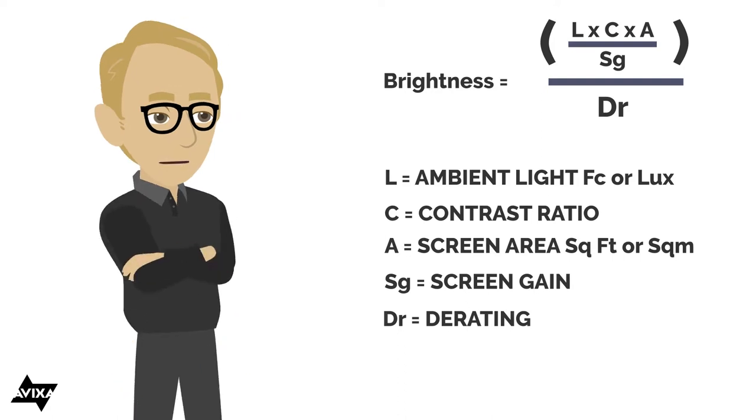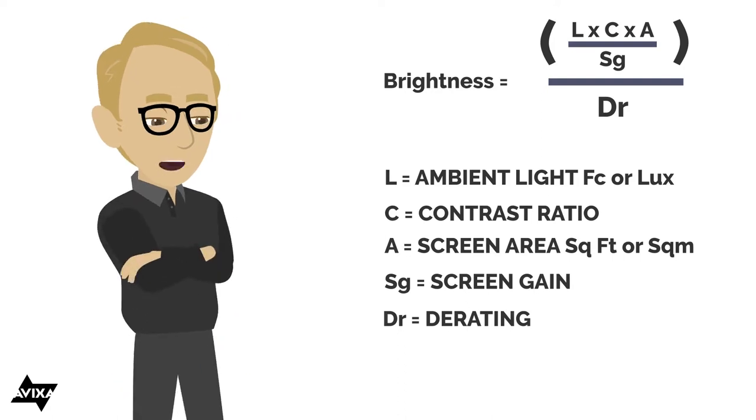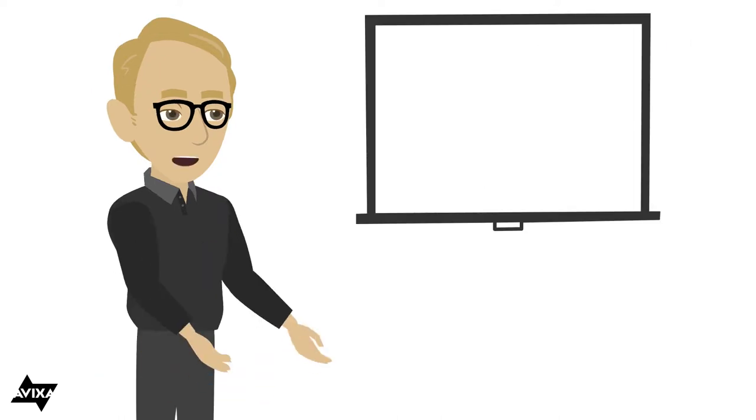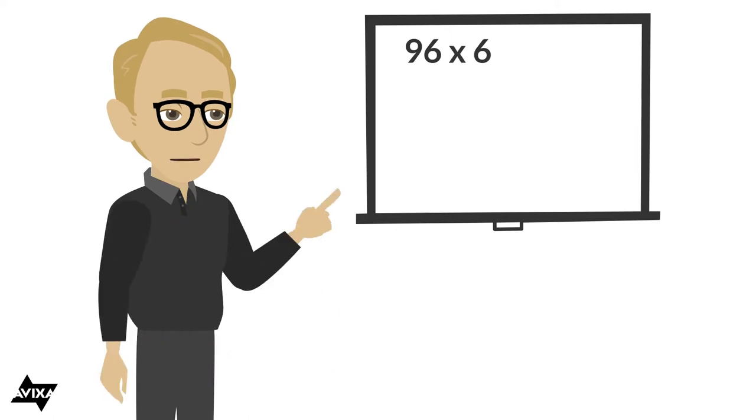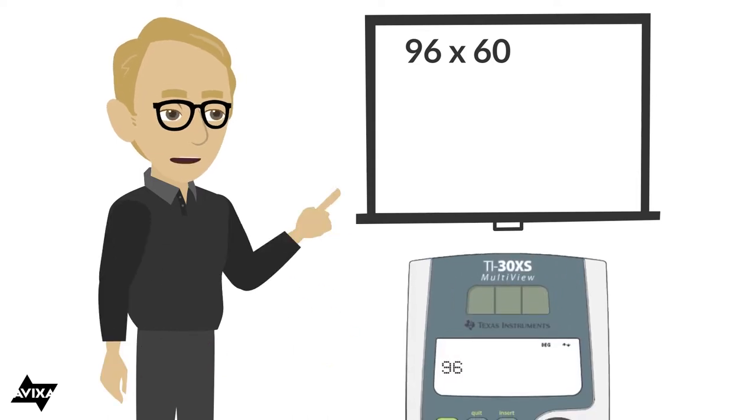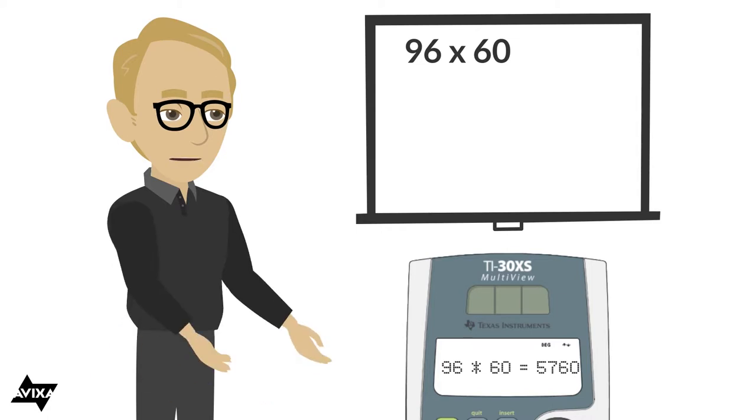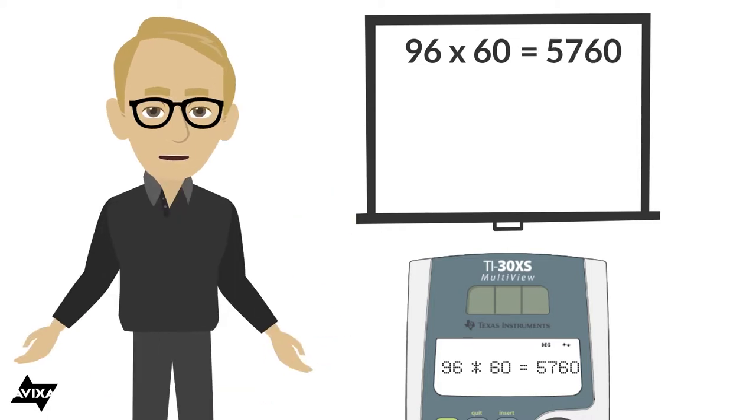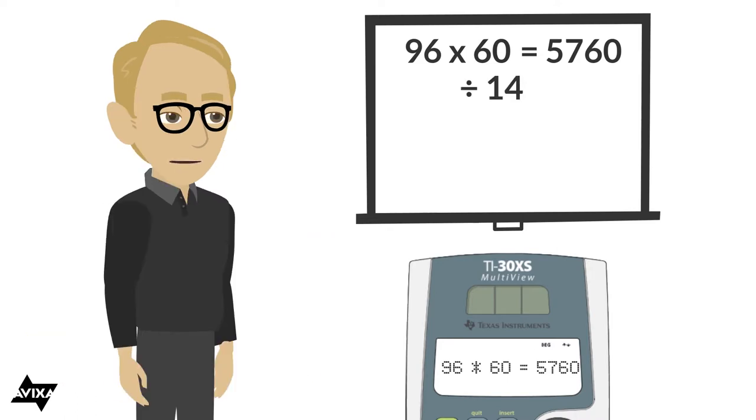But let's see how we actually work out the area of the screen before we go through the rest of the formula. Let's do U.S. customary first. Let's say I have a screen that is 96 by 60, and that's in inches. So the result is going to be in square inches. Let's see what that works out towards. 96 times 60 is 5,760 square inches. But I mentioned I need this in square feet. That's the easiest way to convert this into square feet. Divide that number by 144.